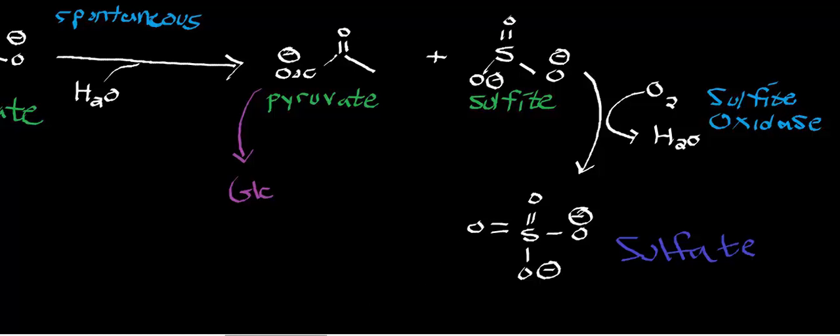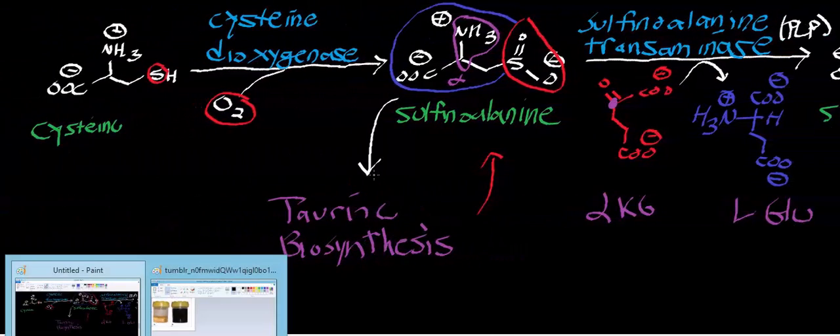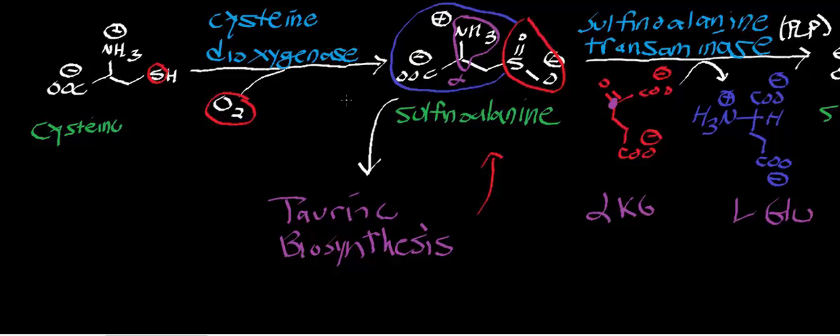So let's do a quick recap of this reaction scheme. Cysteine reacts with the rate-limiting and committed step in its catabolism, which is cysteine dioxygenase, which incorporates both atoms of molecular oxygen into the sulfur atom of cysteine, generating sulfenoalanine. Remember that this enzyme is regulated by ubiquitination.